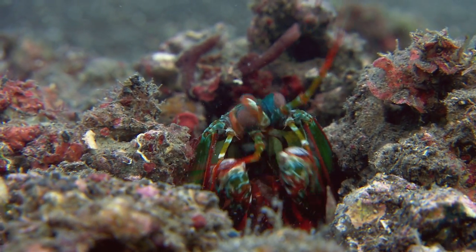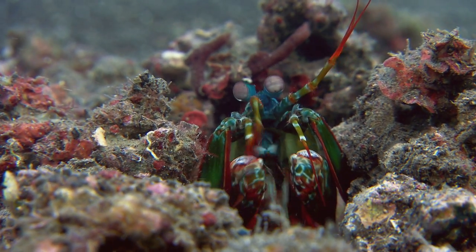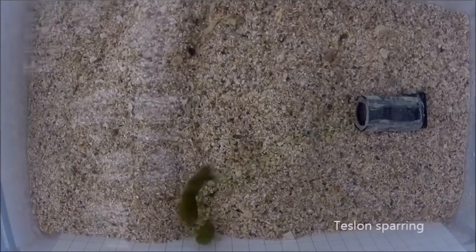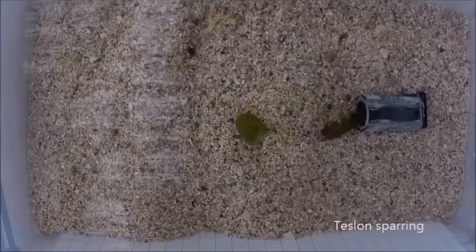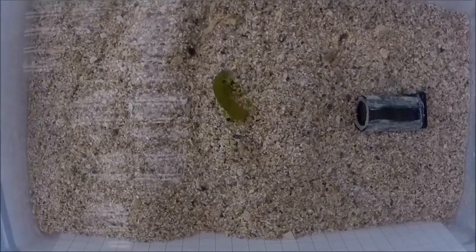They use those face hammers to blow prey, like clams and crabs, to pieces. They also use them to fight other mantis shrimp for housing. It's a lot like the techies in San Francisco, only with more legs, I guess.